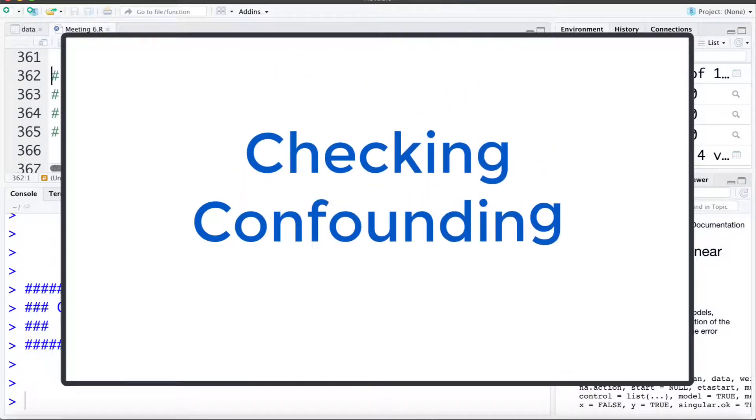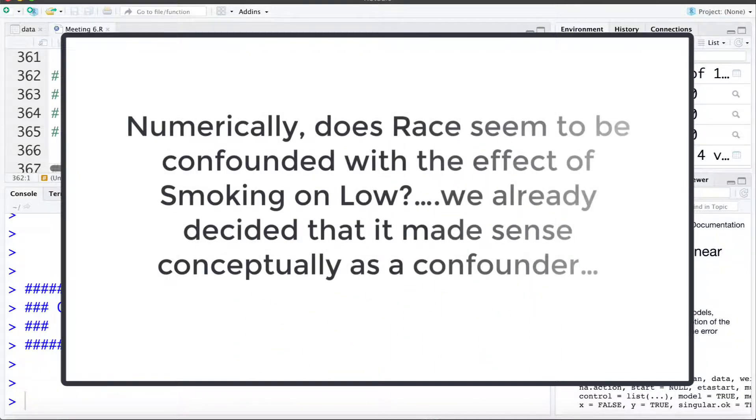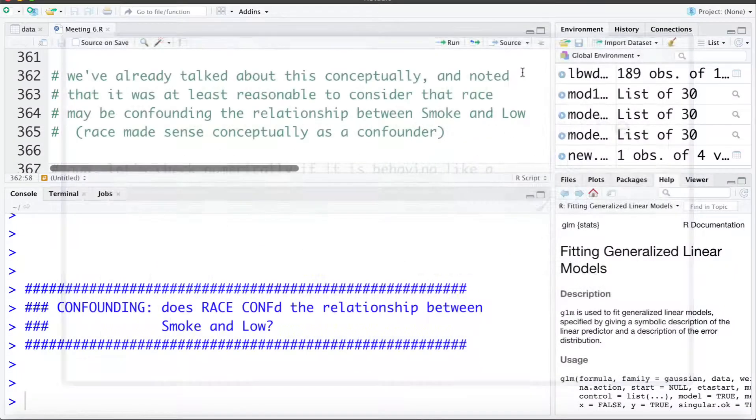In this video we're going to talk about confounding and in particular if we think that the race variable is confounding the relationship between smoking and low birth weight. We've already talked about this conceptually previously and we noted that it was reasonable to consider that race might be confounding the relationship between smoking and low. We thought that the diagram for confounder made sense conceptually.